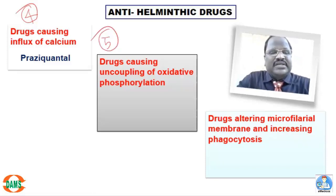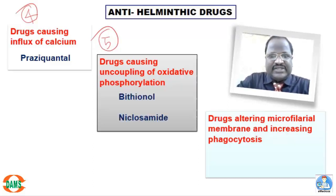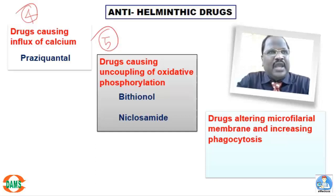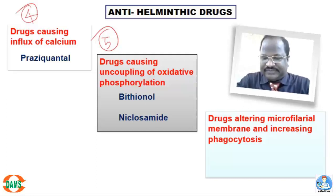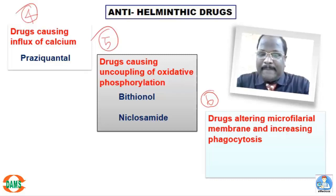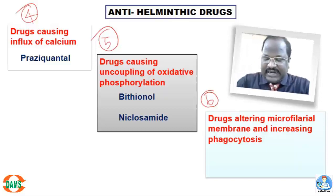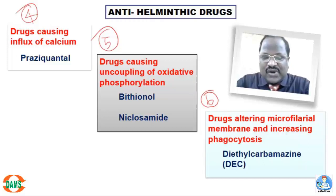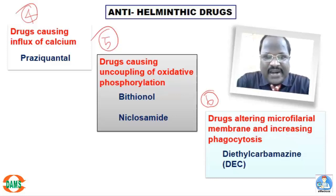The fifth classification: drugs causing uncoupling of oxidative phosphorylation — bithionol and niclosamide. They are not commonly used, but you should know they cause uncoupling of oxidative phosphorylation. One more important class: diethylcarbamazine (DEC), a drug that alters microfilarial membrane and increases phagocytosis. So we have classified anti-helminthic agents based on their mechanism of action.